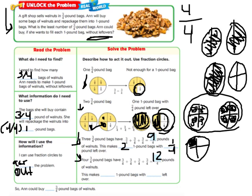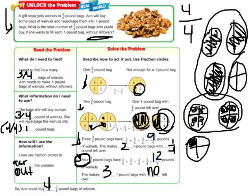Okay, so that fills in exactly 3 bags without any leftovers. So this makes 3 one-pound bags with nothing or no leftovers. So Ann could buy 4 bags of 3/4 pound. It took us 4 bags of 3/4 pound to find one that didn't have any leftovers.